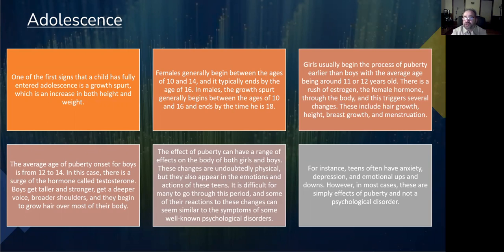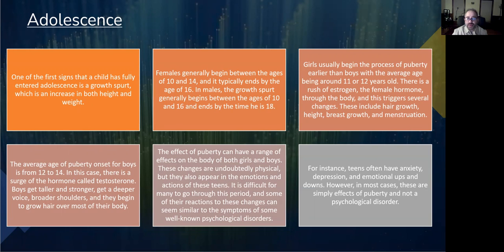There is a rush of estrogen — the female hormone — through the body, which triggers several changes in girls. These include hair growth, height, breast growth, and menstruation. The average age of puberty onset for boys is 12 to 14. In this case, there is a surge of the hormone testosterone. Boys get taller and stronger, get a deeper voice, broader shoulders, and begin to grow hair on most of their body.